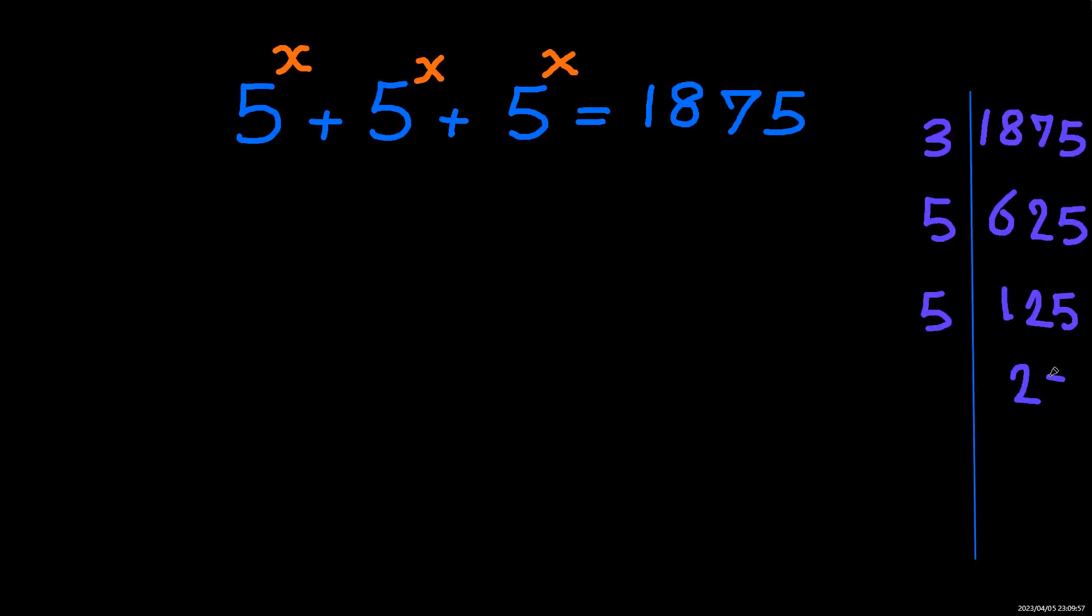We continue dividing by 5 until we reach 1. So 1875 can be written as 3 to the power of 1 multiplied by 5 to the power of 4.